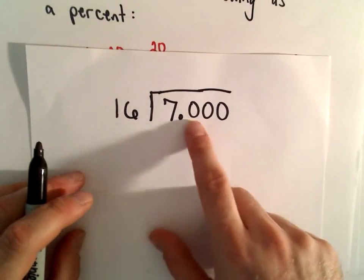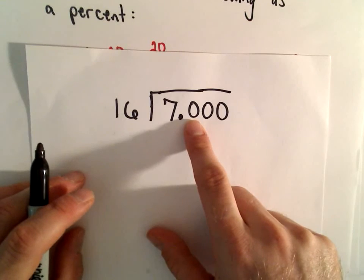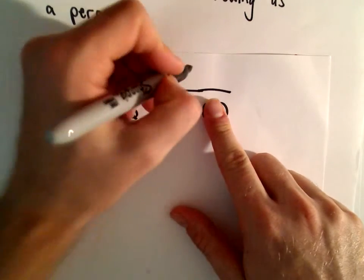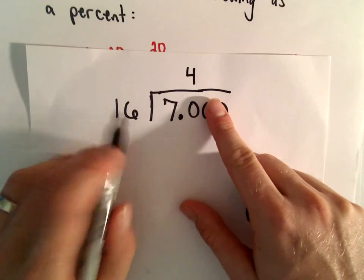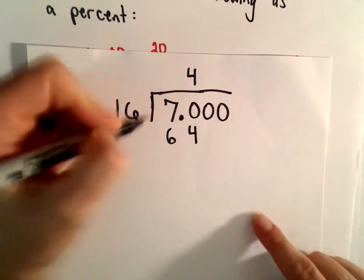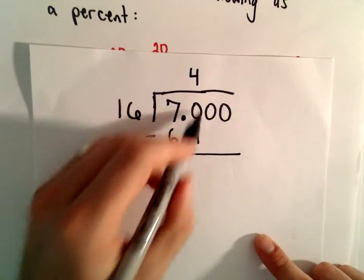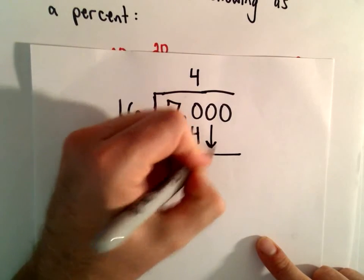Okay, so 16 won't go into 7. It'll certainly go into 70, and let's see, I guess it would go in 4 times. 4 times 16 is going to be 64. We can subtract. That would give a 6, drop down a 0.